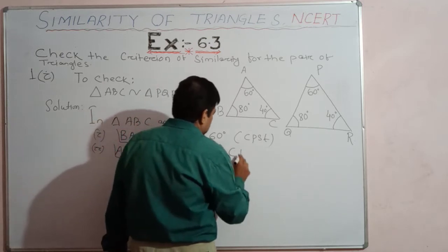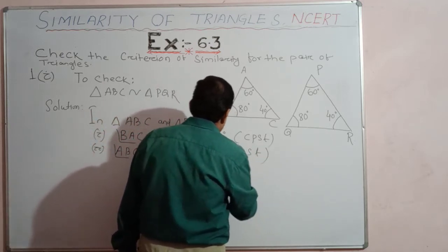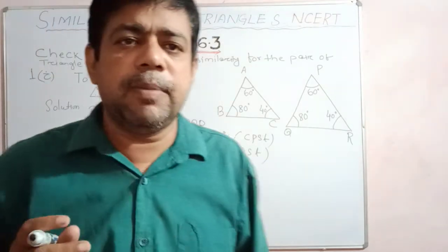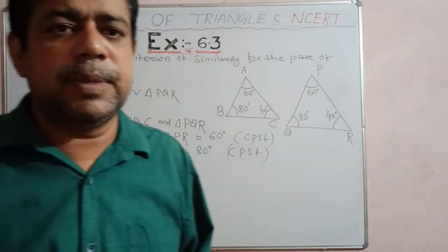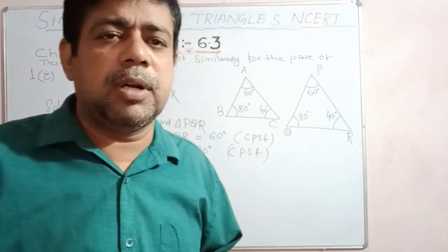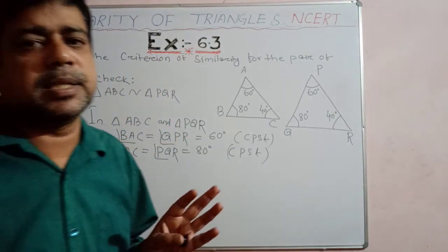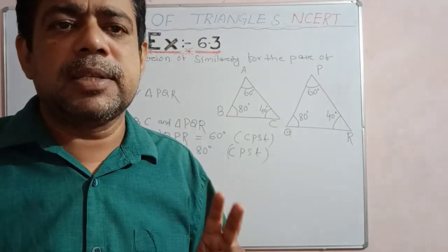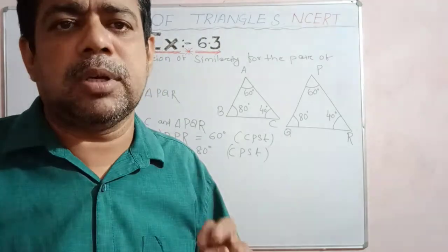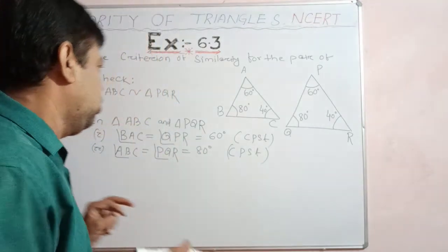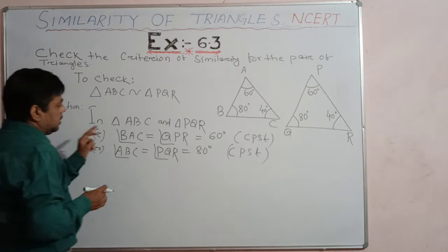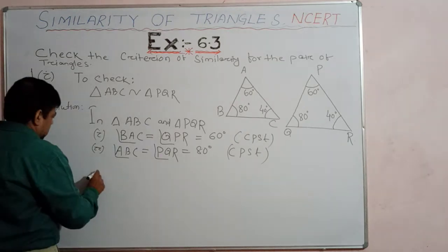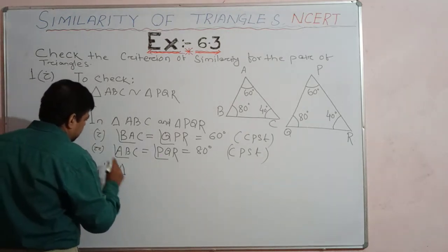This is the necessary and sufficient condition. According to the statement of angle-angle similarity: if two angles of a triangle are respectively equal to the corresponding angles of another triangle, then the triangles are similar. Since two angles of triangle ABC are equal to the corresponding angles of triangle PQR, it satisfies the condition of angle-angle similarity.